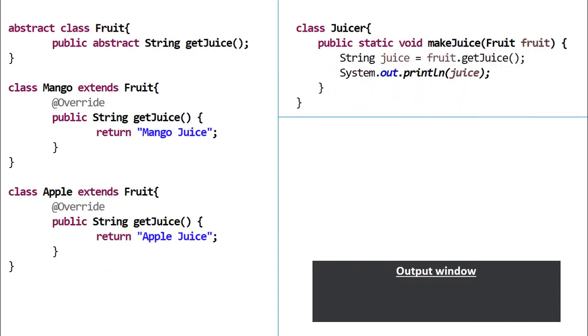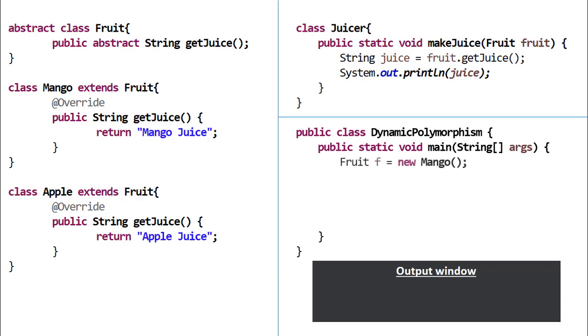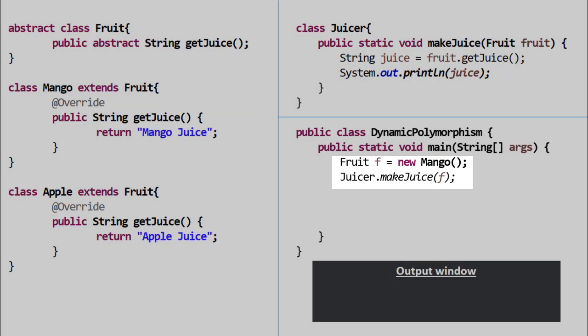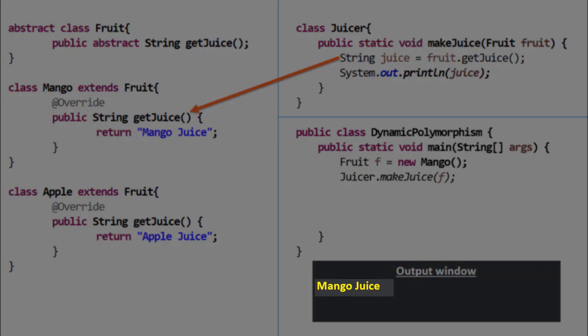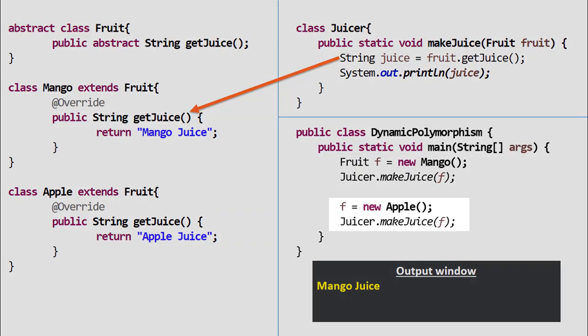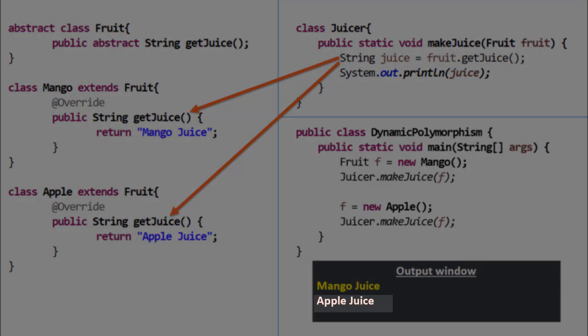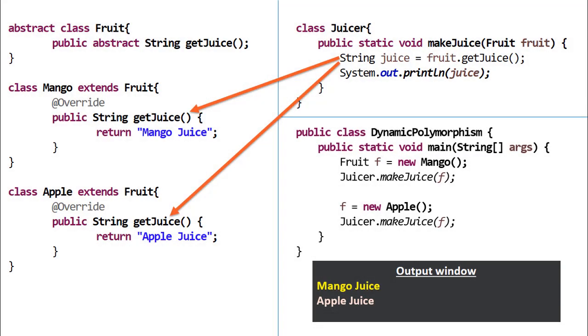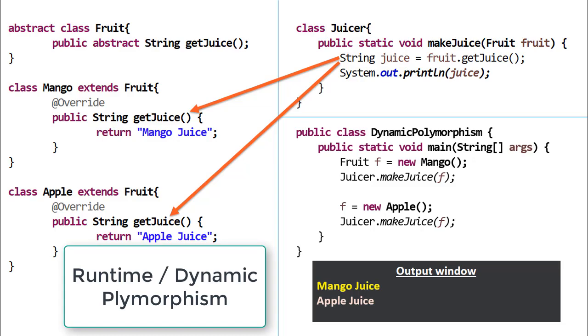Let us put all the things together and write the caller class main method. When an object of mango is passed to the makeJuice method, the output window prints mango juice. Whereas, when the object of apple is passed, it results in printing apple juice. The call to the fruit.getJuice will get mapped dynamically to the child object at runtime only. Hence, this is called runtime or dynamic polymorphism.